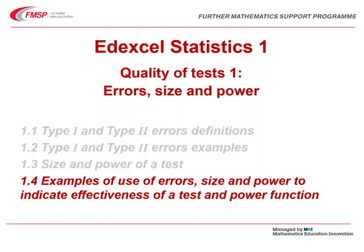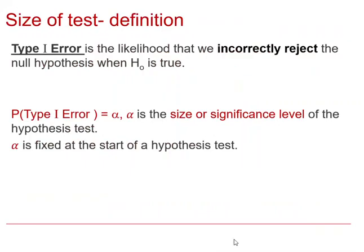Hello and welcome to this EdExcel Further Math Statistics 1 video looking at types of errors, size and power, and also looking at the power function. A reminder that the probability of a Type I error is alpha, the size or significance level of a test, and is the probability of incorrectly rejecting the null hypothesis when the null hypothesis is actually true.